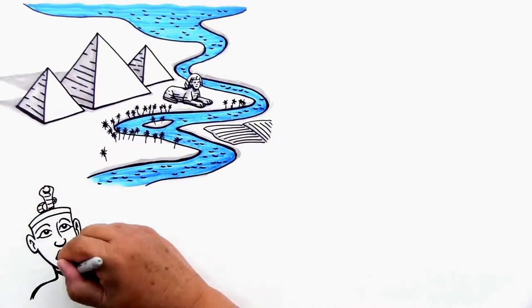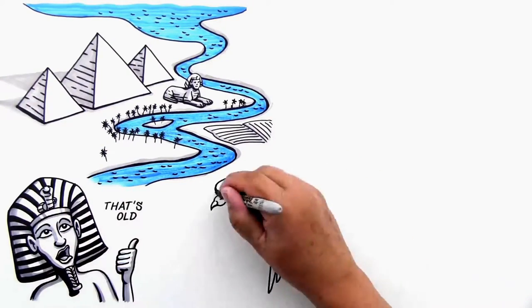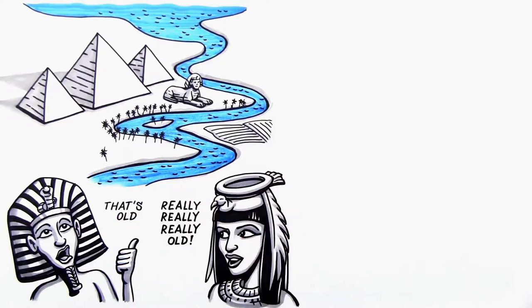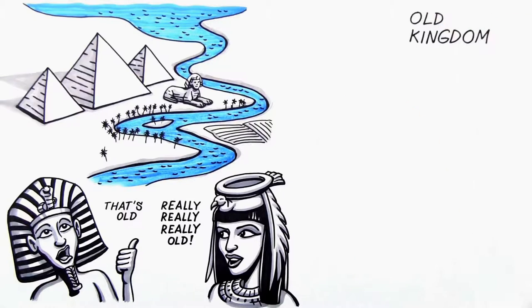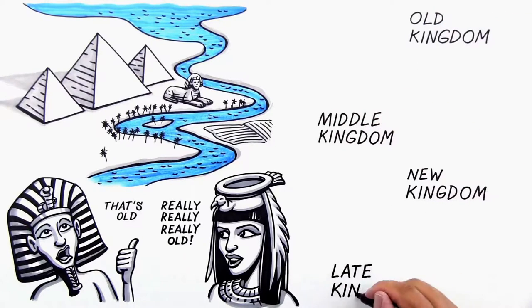When Tutankhamen became Pharaoh, the great pyramids were already 1,000 years old, and it was another 1,000 years after that when Cleopatra held power. Egyptologists invented an ingenious system to classify the different periods of Egyptian rule. There's the Old Kingdom, Middle Kingdom, the New Kingdom, and the Later Kingdom. How did they think of that?